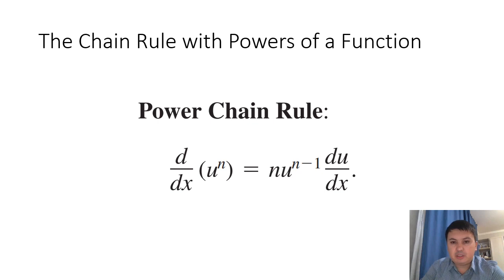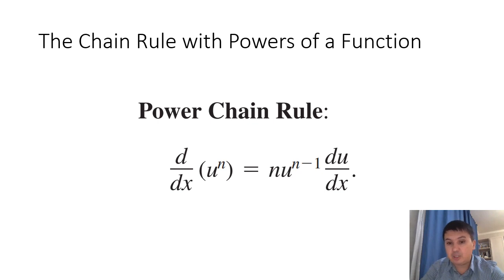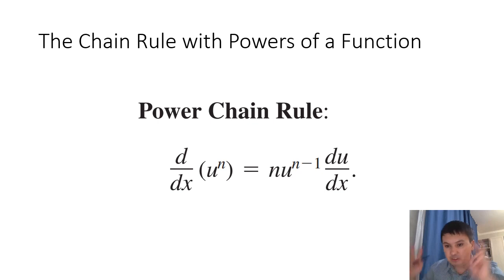How do we handle powers of a function? If u is a function raised to the power n, and if u were simply x we'd use the power rule: n times x^(n−1). With a general function u, the chain rule gives the formula: the derivative of u^n is n · u^(n−1) · du/dx — that is, the derivative of the inside. Let's do some examples.